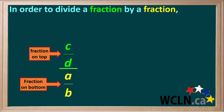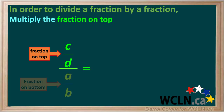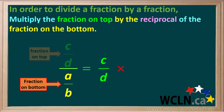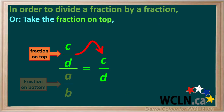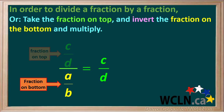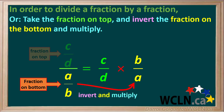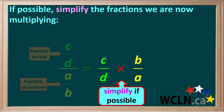In order to divide one fraction, c over d, by another fraction, a over b, multiply the fraction on top, represented by c over d, times the reciprocal of the fraction on the bottom, which is b over a. Or we could say, take the fraction on top, c over d, then take the fraction on the bottom, and invert it, and multiply it. At this point, we check the fractions we are now multiplying and simplify them if possible before we multiply them.